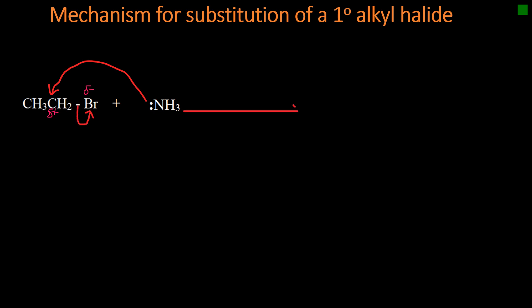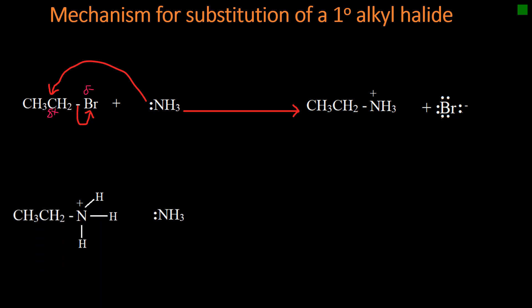This forms a bromide ion and an ammonium ion. An ammonium ion is any ion in which nitrogen has formed four single covalent bonds. Because of the positive charge on nitrogen in the ammonium ion, the hydrogens on nitrogen are very labile, and any base in the medium — like ammonia — can abstract a hydrogen from the ammonium ion. This forms an amine molecule, which is more stable compared to the ammonium ion, and an ammonium ion in the mixture.